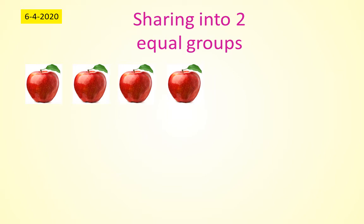Equal groups means what? Same, same. So we have to divide into two equal groups. How can we divide? Two and two. Here also same and this side also same. Here two apples and here also two apples.